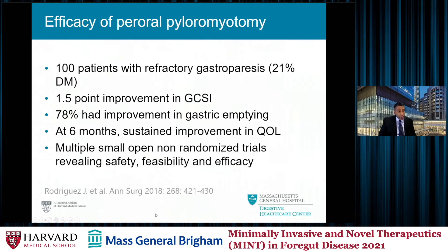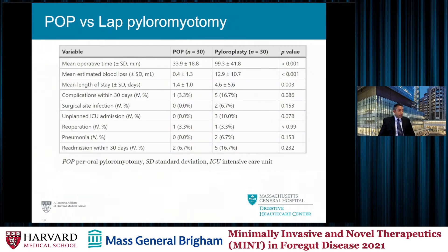What's the efficacy? You'll see a lot of different studies on pyloromyotomy. This was published from the Cleveland Clinic Group — still I think the largest study — 100 patients with refractory gastroparesis. They noted a 1.5-point improvement in GCSI, many had improvements in gastric emptying, and this was sustained at six months. Since then, many smaller studies have shown this technique is safe, feasible, and has some degree of efficacy.